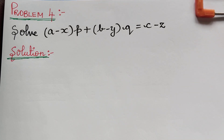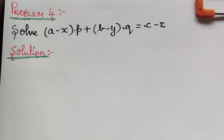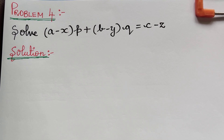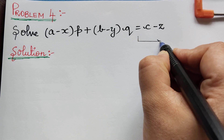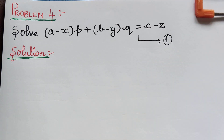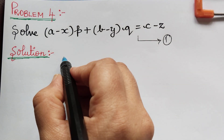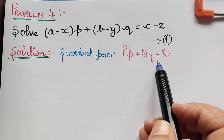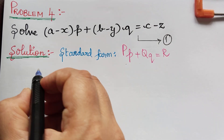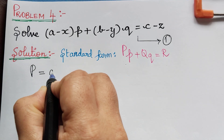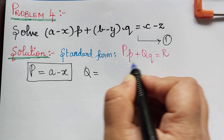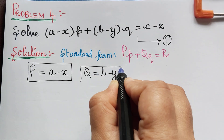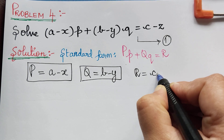Dear students, we are going to solve problem 4 under the topic Lagrange's linear partial differential equation by using the method of grouping. As the first step, let us mark the given equation as equation 1 and compare it with the standard form of Lagrange's partial differential equation. We see that P is equal to A minus X, Q is equal to B minus Y, and R is equal to C minus Z.